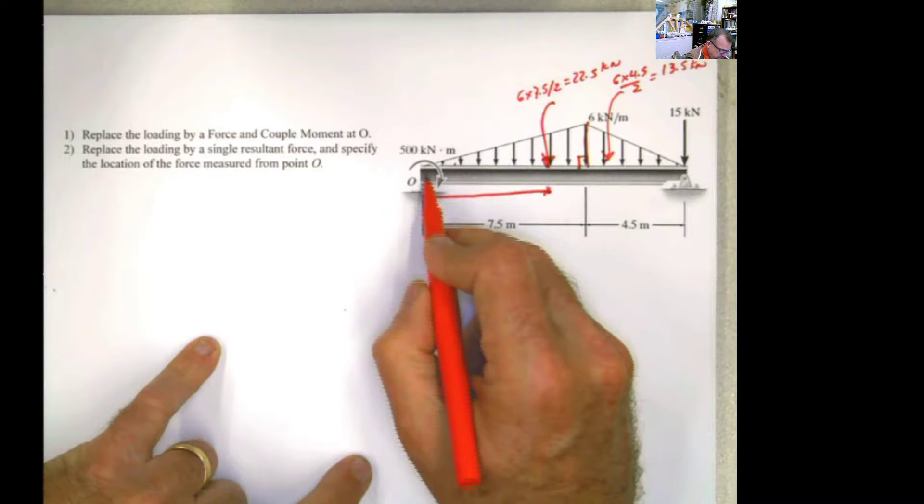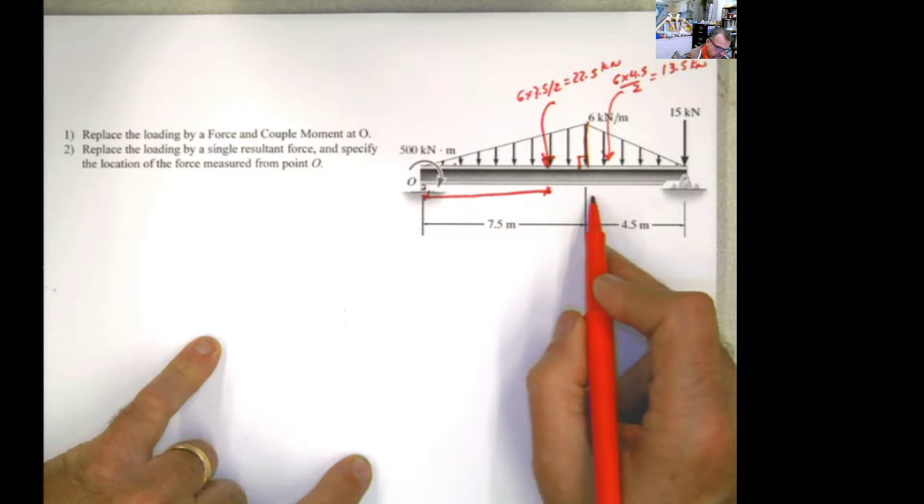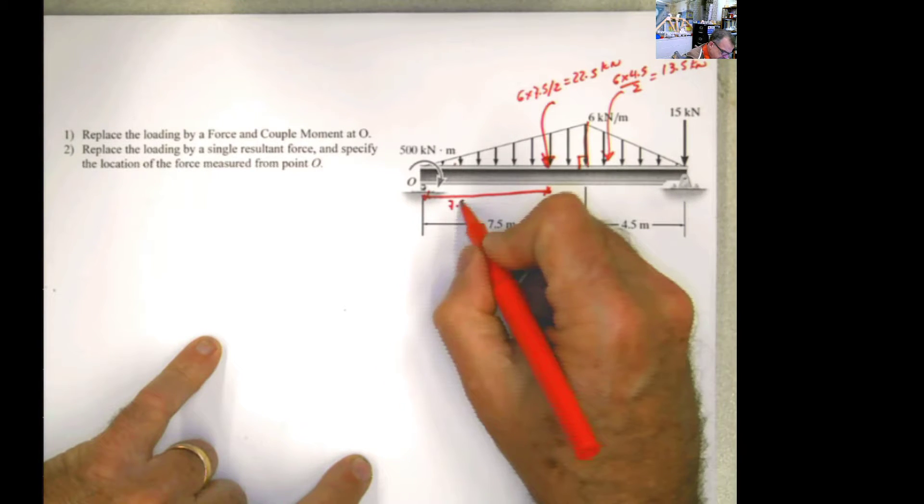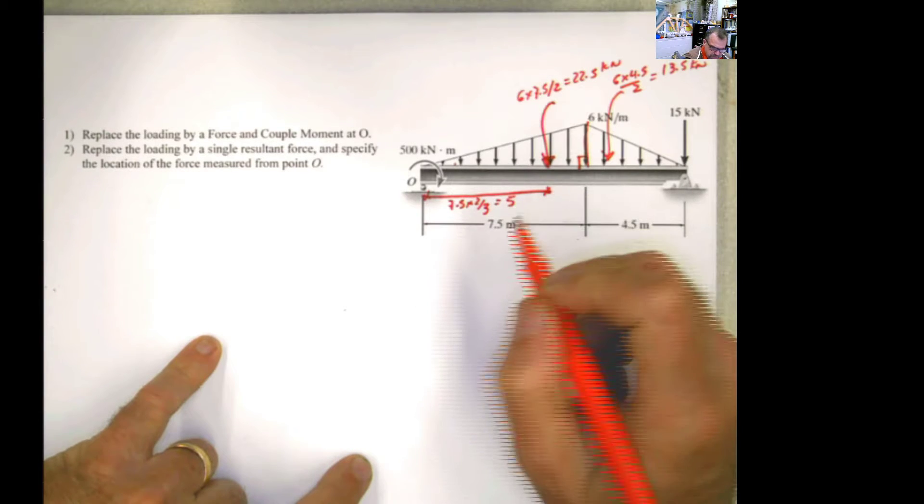Because we are calculating it with respect to point O, I'm going to use this distance, which is 2/3 of 7.5. So 7.5 times 2/3, that's 15 divided by 3 is 5 meters.